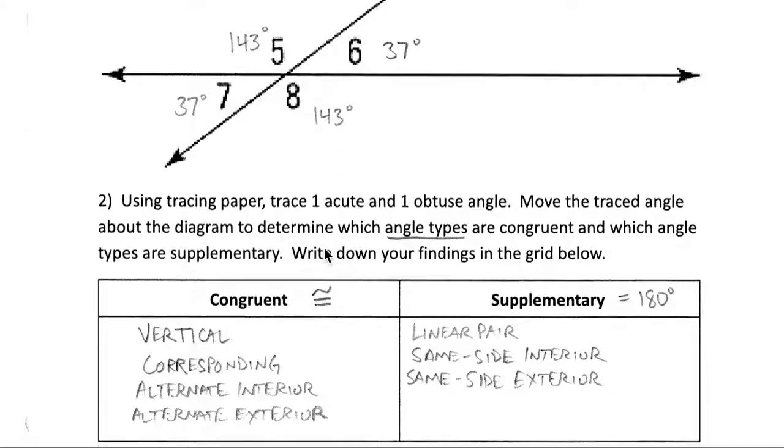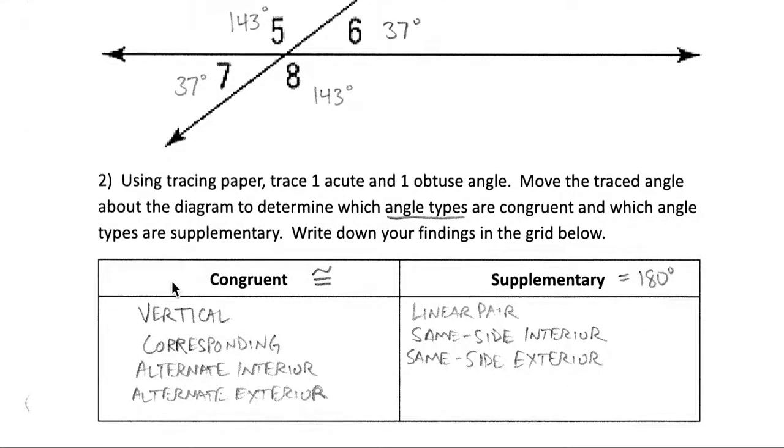We can put that down in a little organizer here. The four types of angles that are congruent are vertical, corresponding, and our two types of alternate angles. Angles that are supplementary or add up to 180, those are any of the linear pairs, those adjacent angles that are right next to each other, or any of our same side angles.